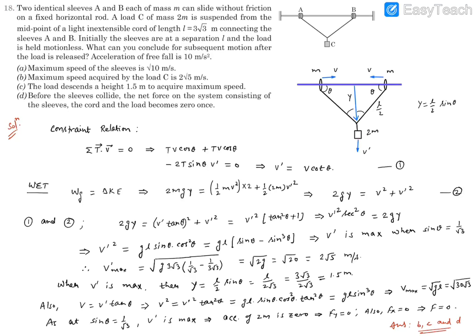Problem 18. It reads: two identical sleeves A and B, each of mass M, can slide without friction on a fixed horizontal rod. A load C of mass 2M is suspended from the midpoint of a light inextensible chord of length L equal to 3√3 meters, connecting sleeves A and B. Initially, the sleeves are at a separation L and the load is held motionless. What can you conclude about subsequent motion after the load is released? Acceleration of free fall g is given as 10.